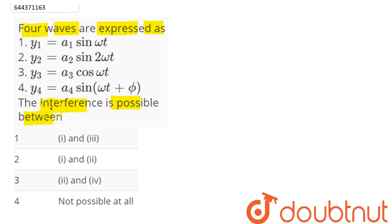So here we can say for interference of two waves, their frequency must be same. That is they must have same frequency or we can say they must have same angular frequency.